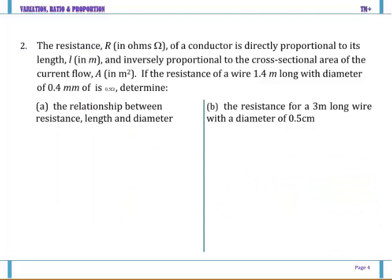Next, the resistance R in ohms of a conductor is directly proportional to its length L and inversely proportional to the cross sectional area. So resistance is directly proportional to length and inversely proportional to area. So we can combine that to be R equals k L over A. Let's find k.